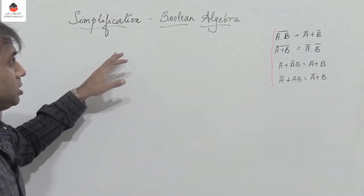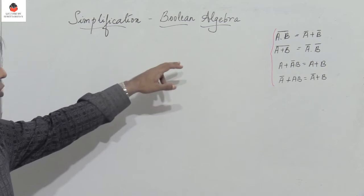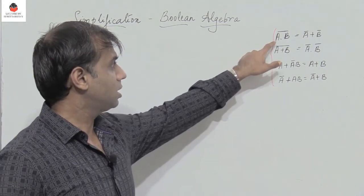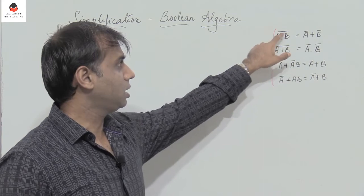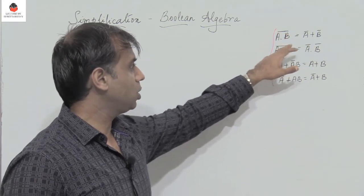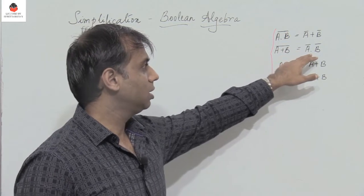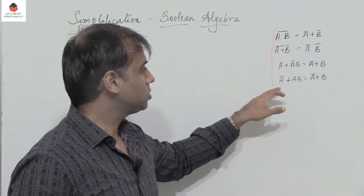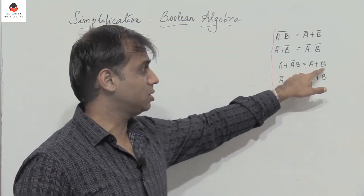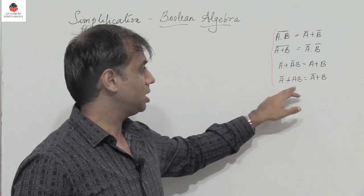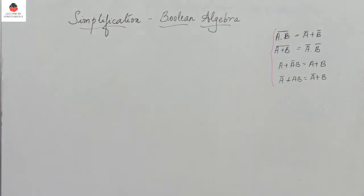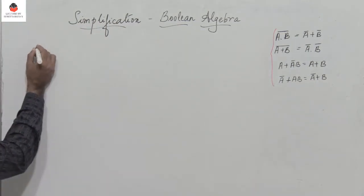To simplify expressions using Boolean algebra, you have to remember De Morgan's theorem, which states that (a·b)̄ = ā + b̄, and (a+b)̄ = ā·b̄. Also remember: a + āb = a + b, and ā + ab = ā + b. Let us take a few expressions and simplify them.